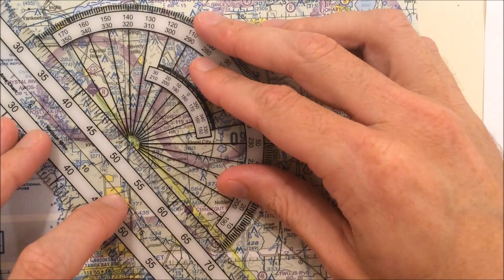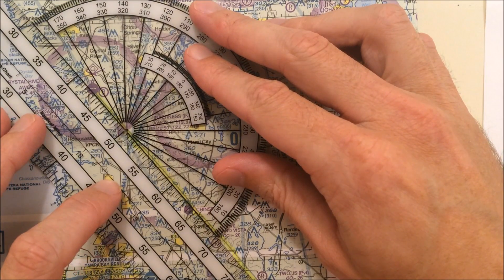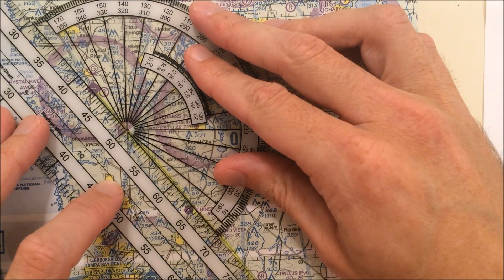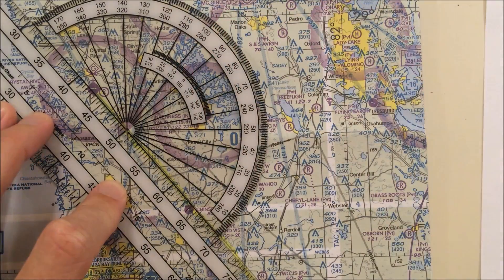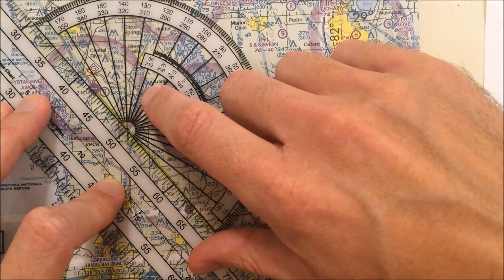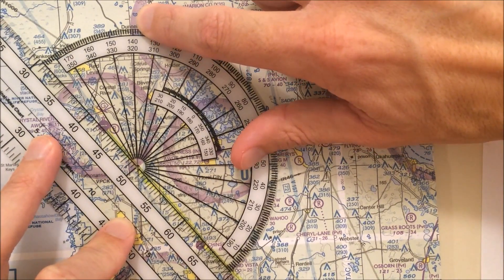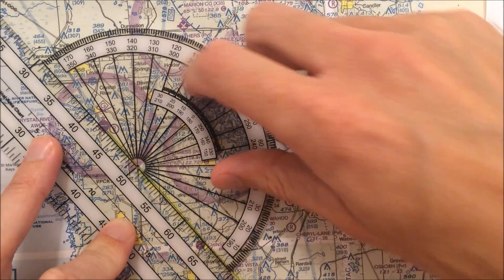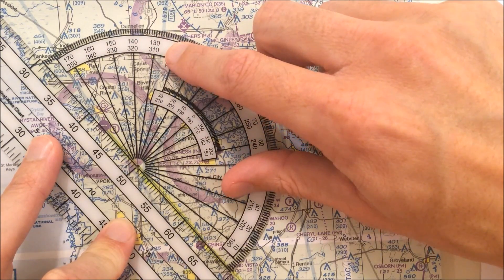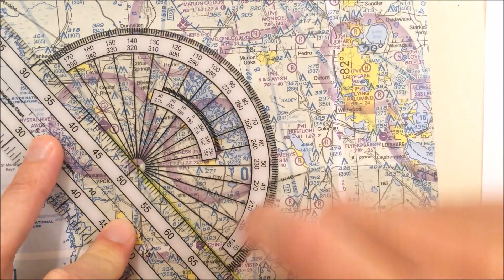And then I'm going to put the grommet, the center of this thing, right over the line of longitude. Now again, I have numbers to pick from. So I look at where the line intersects the top of the plotter here. So I have a couple of choices. I have 142 degrees, or I have 322 degrees.